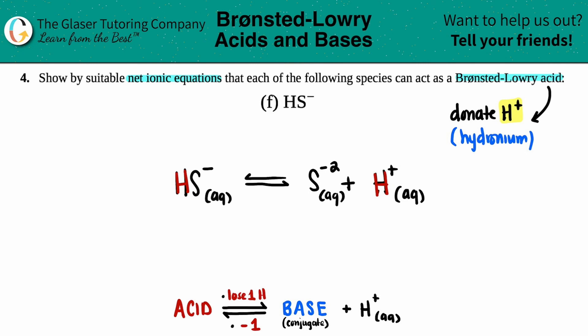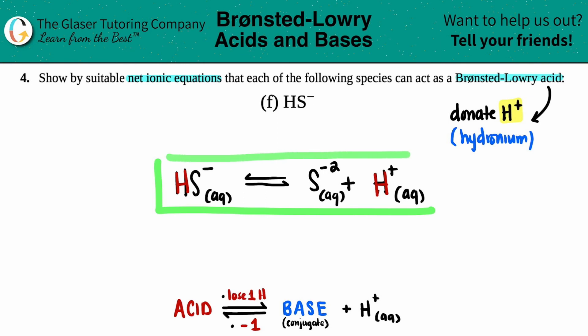And now we are done — that's all you have to do. This is your net ionic equation showing that HS⁻ is a Brønsted-Lowry acid. Hopefully this helped — let me know in the comments. Thank you so much for viewing the video. Subscribe to the channel, and I will see you all in the next lesson. Bye-bye.